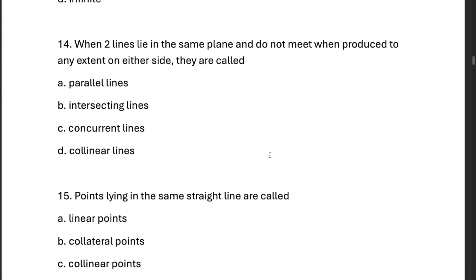When two lines lie in the same plane and do not meet when produced to any extent on either side, they are called A. Parallel lines never meet.